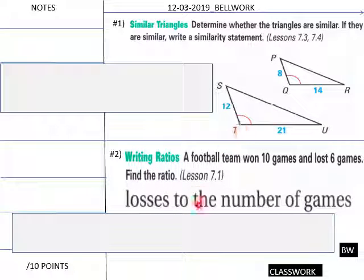Teachers will start with this bell work today. Similar triangles, determine whether the triangles are similar. If they are, write a similarity statement, students, for this. And then a football team won 10 games and lost 6. Find the ratio of losses to number of games. Teachers, give your students about 5 minutes.